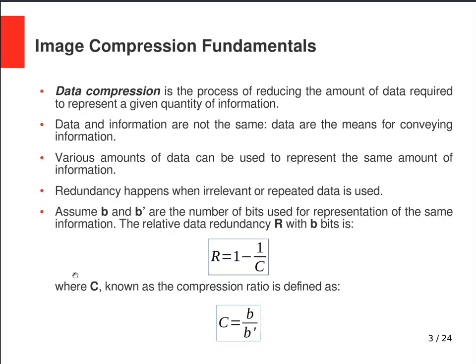Data compression is the process of reducing the amount of data required to represent a certain amount of information. Data and information are not the same in this context — data serves as a means for conveying information. Because of that, you can have various amounts of data to represent the exact same amount of information. We may end up having redundancy if irrelevant or repeated data is used to convey a certain amount of information.